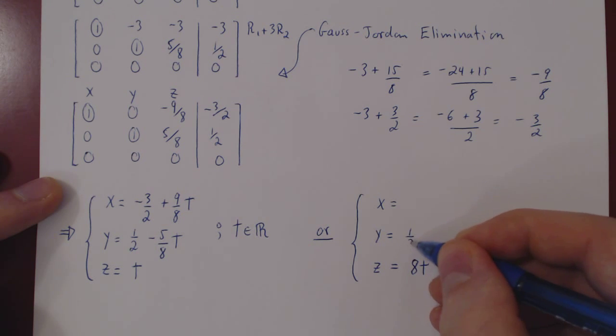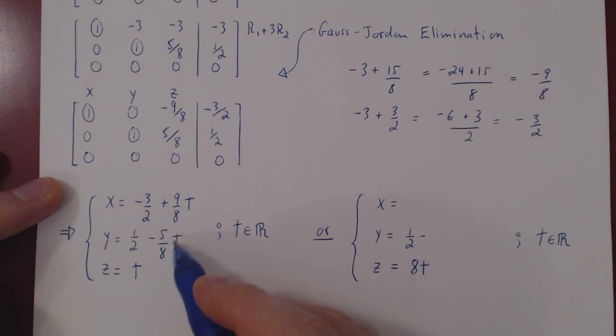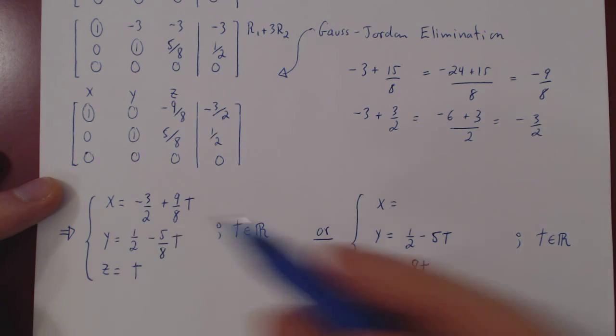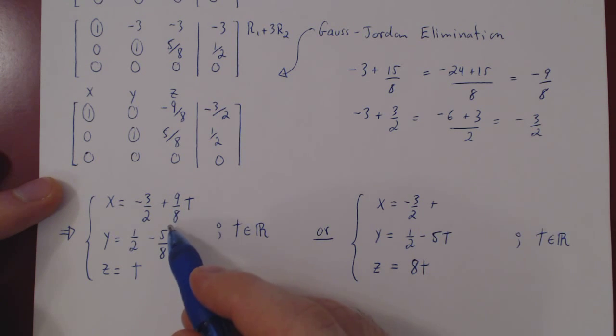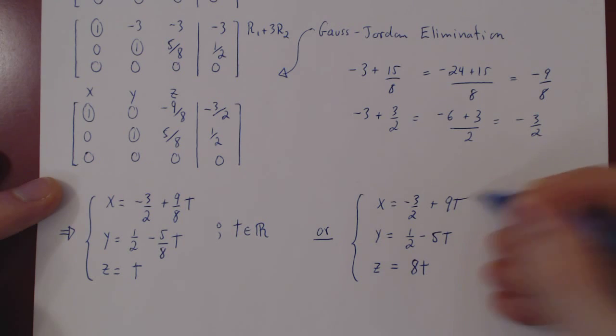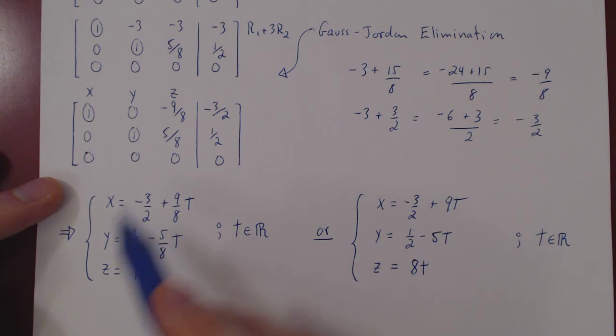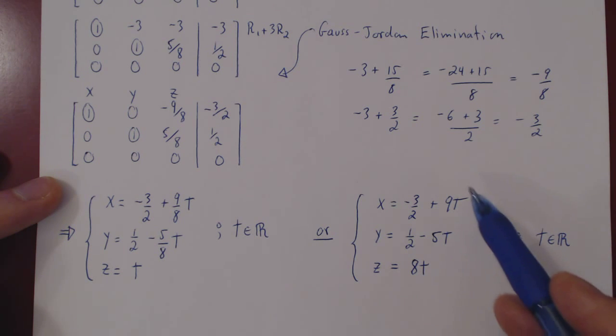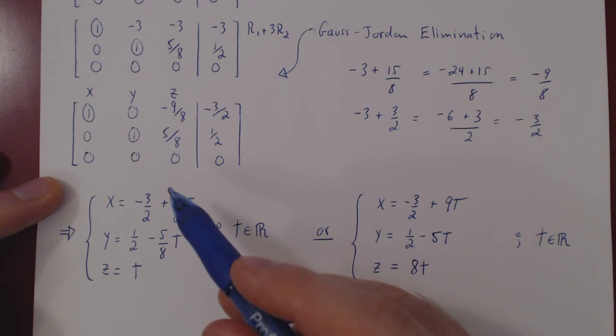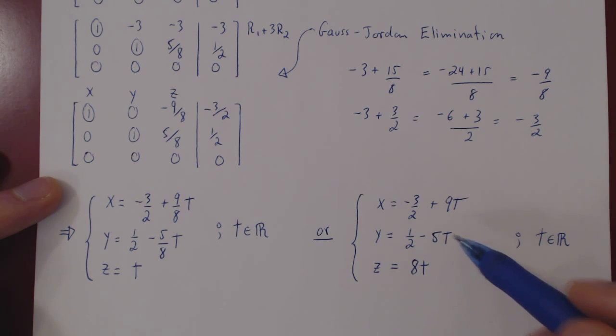So, we'll get 1 half minus 5 over 8, and now we have replaced t by 8t. So, if you replace t by 8t, you'll cancel the 8 and be left with negative 5t. Same thing for x, negative 3 half, plus 9 over 8, instead of t we have 8t, the 8's cancel and we're left with 9t. And now this is a slightly better form of our solution set. So, every time you have a parameter being multiplied by a fraction, you can always rescale your parameter so as to get rid of those fractions. Now, if you notice, the constant terms here are fractions, but once you have fractions as constant terms, you cannot get rid of those. You're stuck with them. But a fraction multiplying a parameter can always be cancelled by rescaling your parameter.